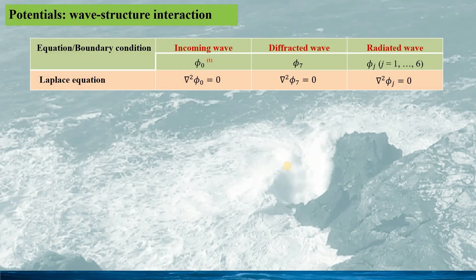Here, a summary is presented for the potential decomposition, the relevant Laplace equations and the boundary conditions, including the incoming wave, the diffracted wave, and the radiated wave. The potentials are given as PHI 0, PHI 7, and PHI j, where j equals 1 to 6, representing the 6 degrees of freedom motion.